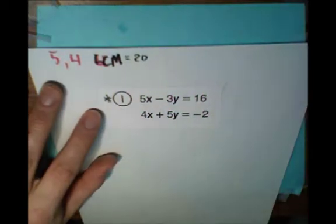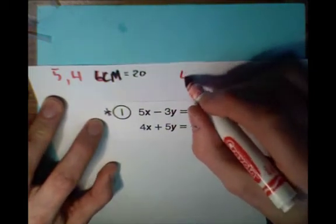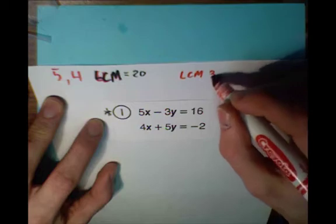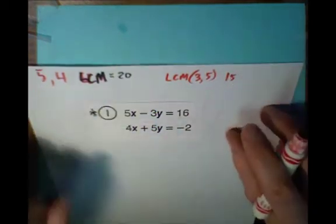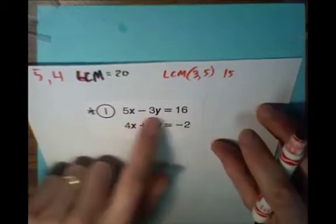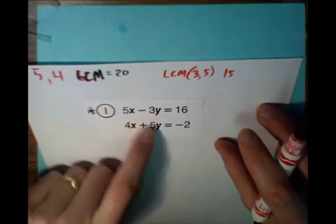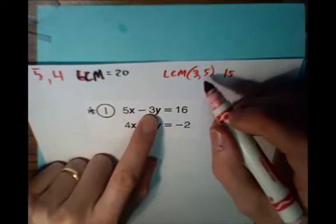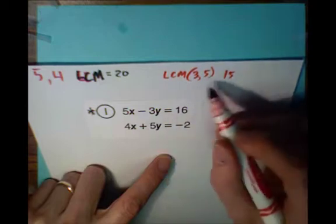Or you could take a look at these other values. We have a 3 and a 5, and the least common multiple of 3 and 5 is 15. And it really is personal preference which you want to do. I think I'm going to eliminate y, just because I like that negative sign there. So I'm actually going to try to get this to be a negative 15y, and this to be a 15y.